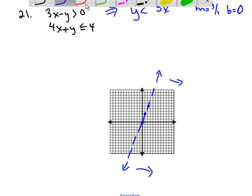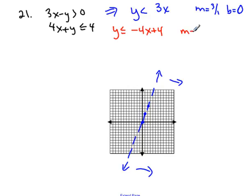Okay, looking at the next equation, solving that for y. I just need to subtract 4x. So, I get y less than or equal to negative 4x plus 4. The slope here is negative 4. The intercept is 4. So, I'll start at the point 0, 4.